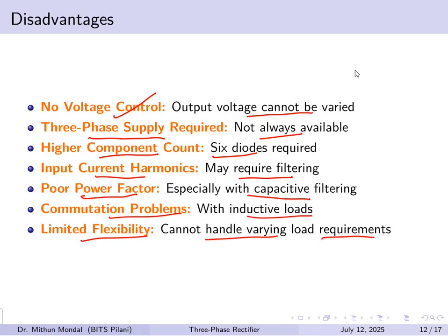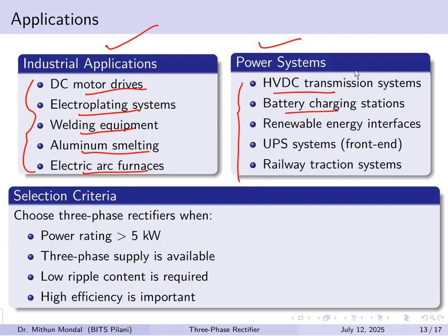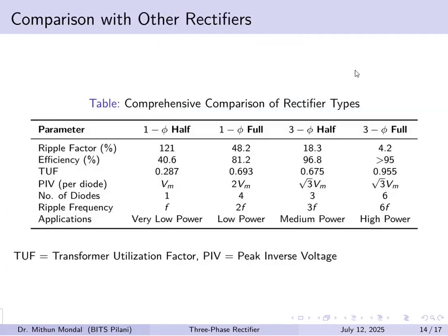Industrial applications include motor drives, electroplating systems, welding equipment, aluminium smelting, and electric arc furnaces. Power applications include HVDC transmission systems, battery charging stations, renewable energy interfaces, UPS systems, and railway traction systems. The selection criteria for choosing this rectifier are: power rating greater than 5 kW, availability of three-phase supply, requirement for low ripple content, and the need for high efficiency.